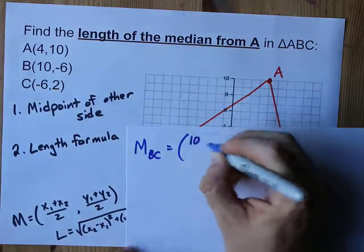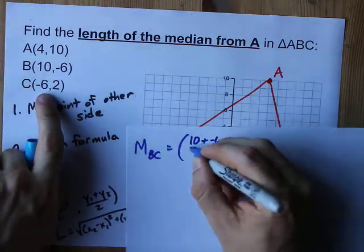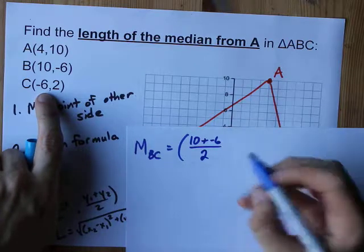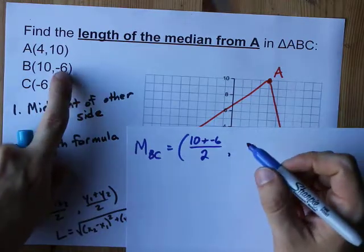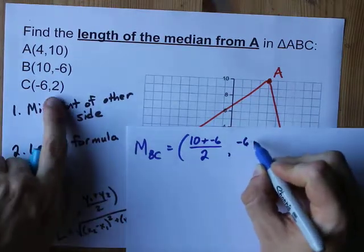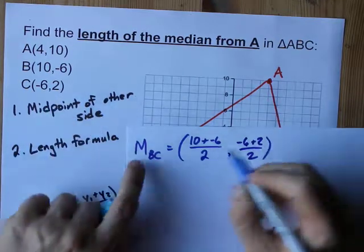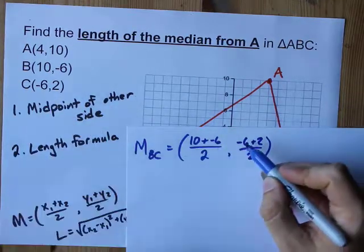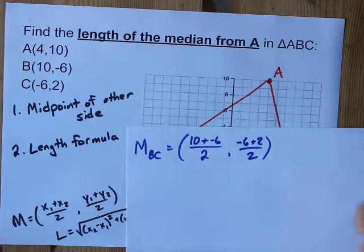What I mean is 10 plus negative 6 divided by 2 comma and then negative 6 plus 2 divided by 2. x1 plus x2 divided by 2, y1 plus y2 divided by 2.